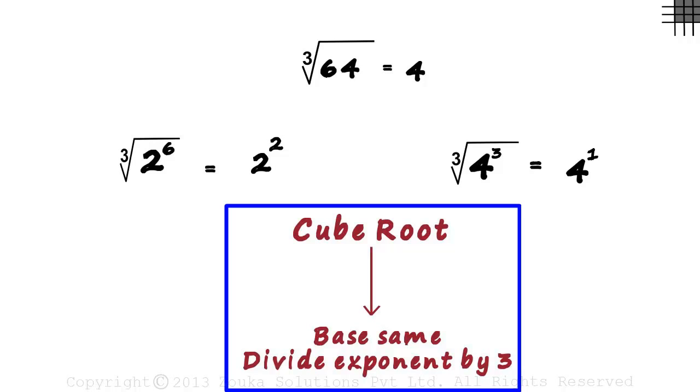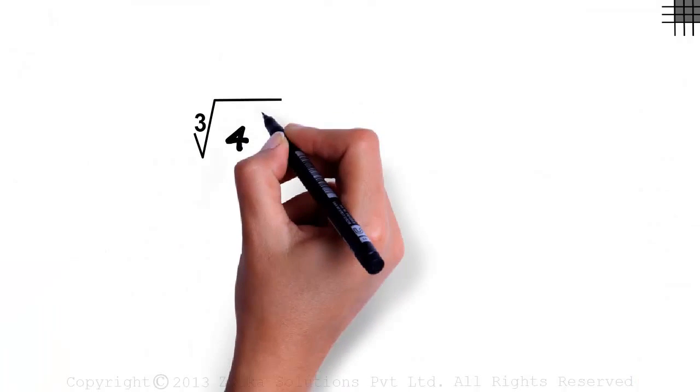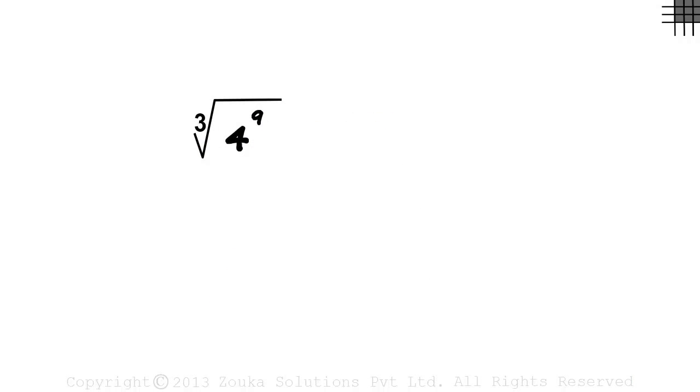Let's quickly look at a couple of examples. Say we want to find the cube root of 4 raised to 9. This actually equals 262,144. Imagine finding the cube root of this big number! But using our technique, all we need to do is keep the base same and divide the exponent by 3. Here the base is 4, hence we write 4, and divide 9 by 3. We get the cube root of 4 raised to 9 as 4 raised to 3.